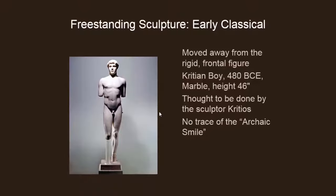This is another Kouros figure, but make no mistake — it is an early classical figure. They think it was done by the sculptor Critios, which is why it's called the Critian Boy. There's no trace of the archaic smile here, and you can tell it's a young man by the very soft modeling on the figure.